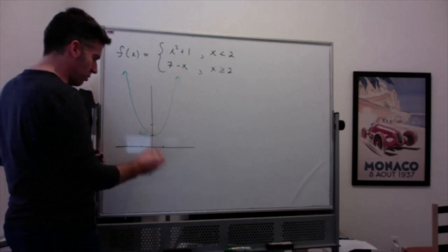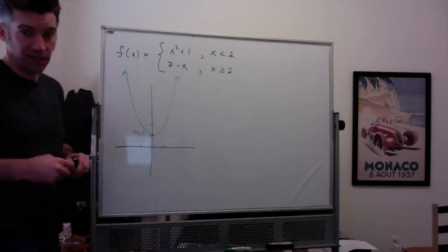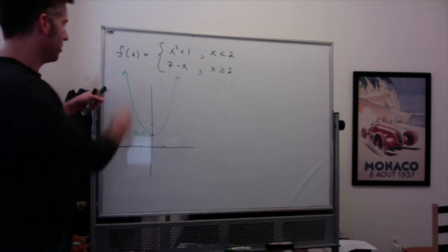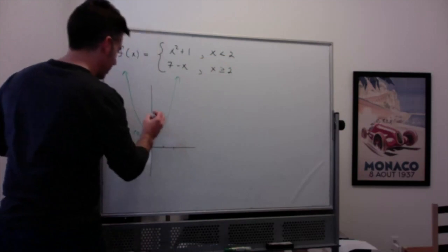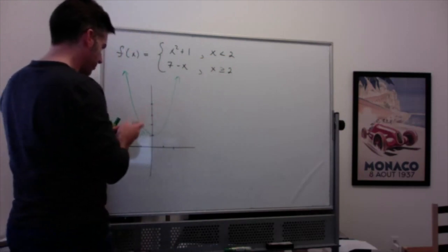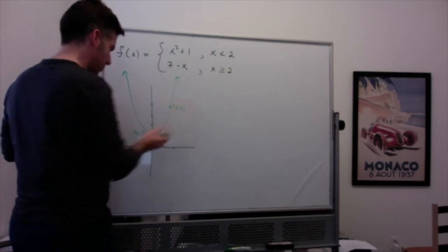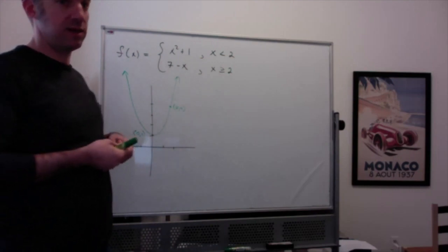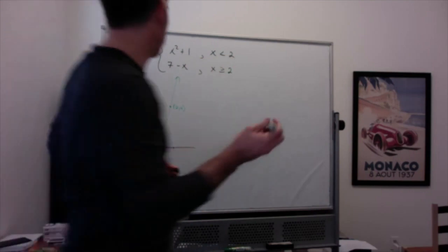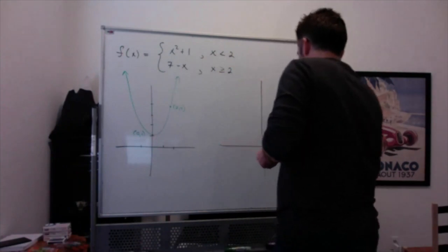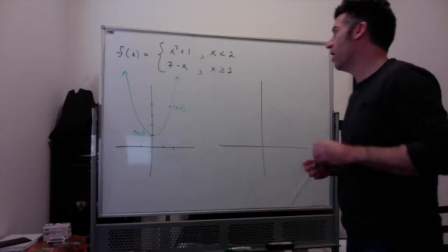The y-intercept is at zero, one. I'm also going to plot the point where x equals two, which is the point (2, 4), because when graphing piecewise functions we like to plot the points where one piece ends and the other piece starts. Then let's graph the other piece as well.